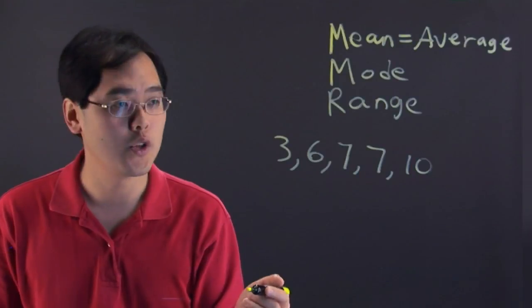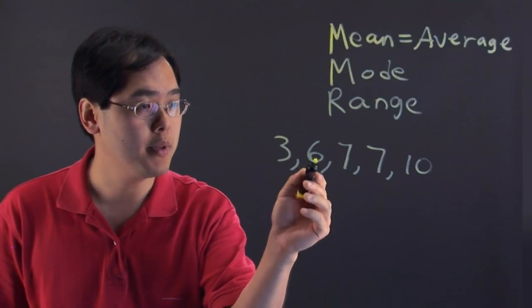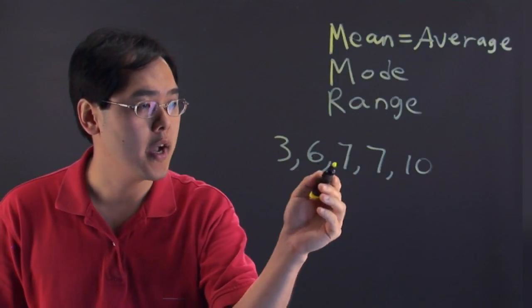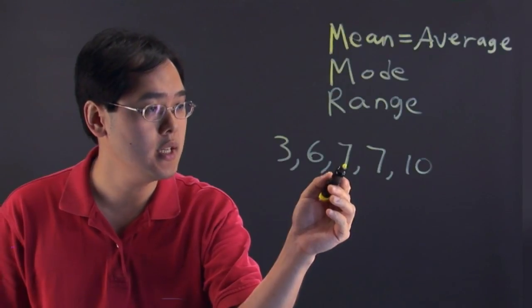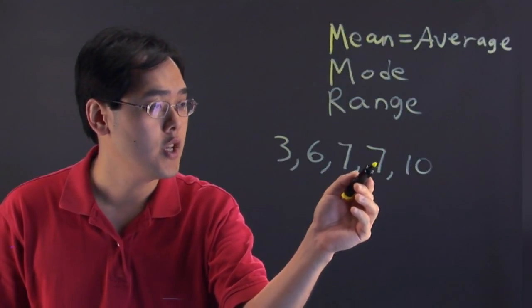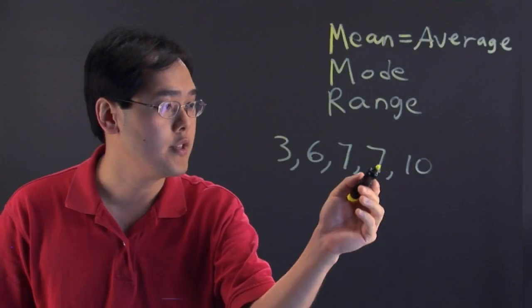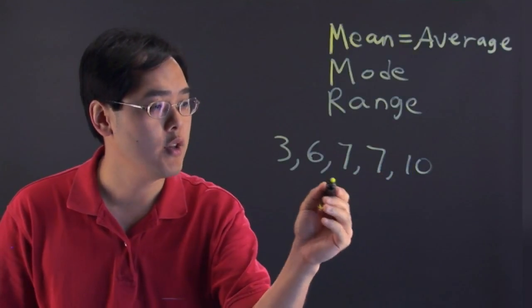Add these along the way: 3 plus 6 is 9, 9 plus 7 is 16, 16 plus 7 is 23, and 23 plus 10 is 33.